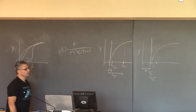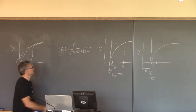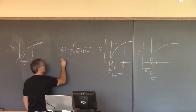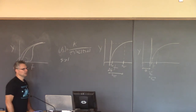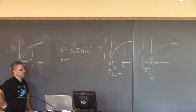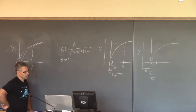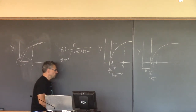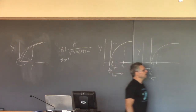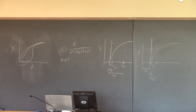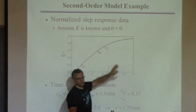So the proposed model is a second-order transfer function. We need to find K, tau, and zeta. Looking at the response, we can tell zeta is greater than one, because if zeta were less than one it would oscillate, and this response is not oscillating. So if we end up finding a value of zeta less than one, something has gone terribly wrong. Now we find the two times T20 and T60. This is a much better graph to work with.